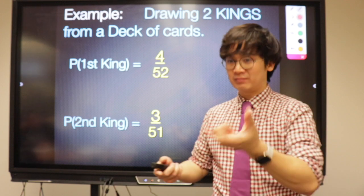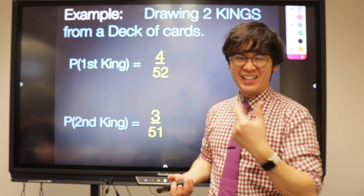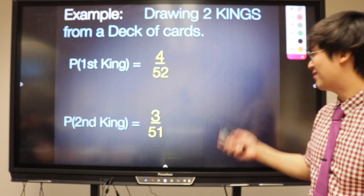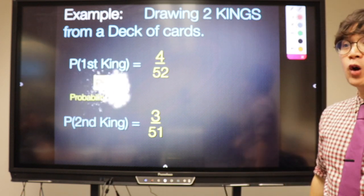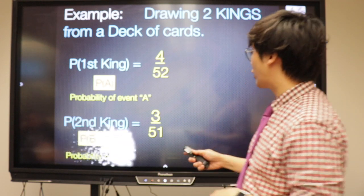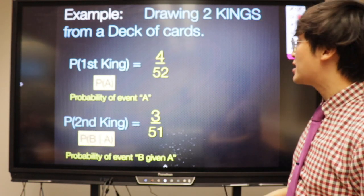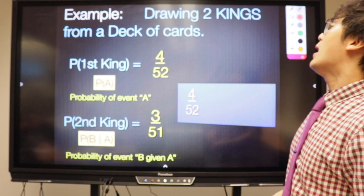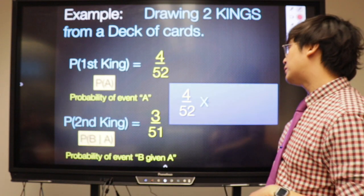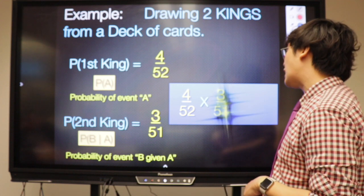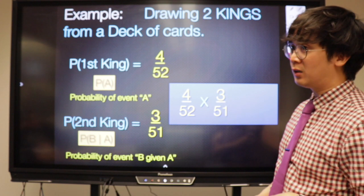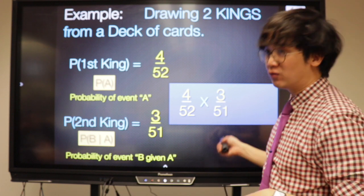That's why sometimes it's called theoretical probability — we just need to be mindful of the theories. Is this an AND or OR operation? It's AND, because they need to be exactly king and king. So you're going to multiply: 4/52 times 3/51.